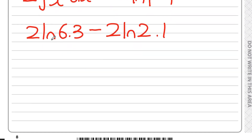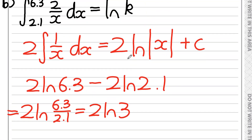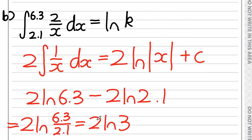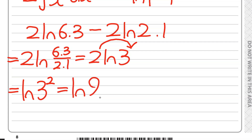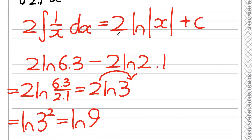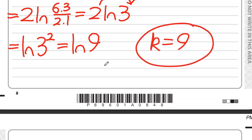Using laws of logs: a natural log minus another natural log can be combined into one log by dividing, so this becomes 2 times the natural log of 6.3 divided by 2.1. Since 6.3 divided by 2.1 equals 3, we have 2 times the natural log of 3. Bringing the 2 inside as a power gives the natural log of 3 squared, which is the natural log of 9. This is in the form natural log of k, where k equals 9.